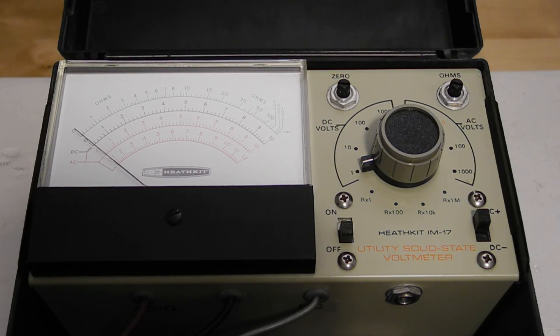The DC plus DC minus switch reverses polarity so you can flip the switch rather than reversing the meter leads to measure a negative voltage.